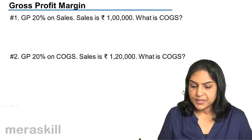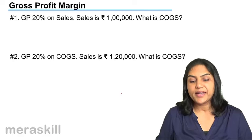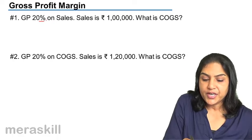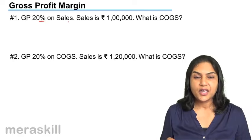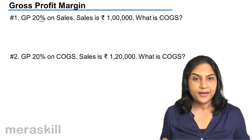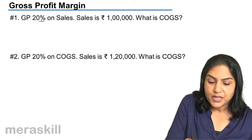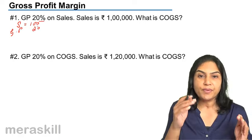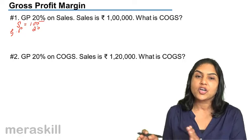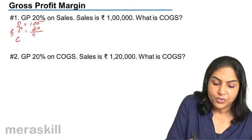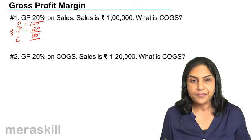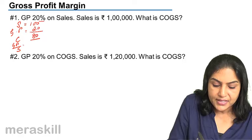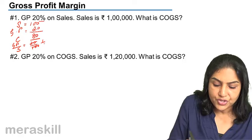Let us consider this with a few examples. If gross profit is 20% on sales and sales is 1 lakh, what is the cost of goods sold? When GP is on sales, sales is 100, so profit is 20. Therefore cost is 80. The relation GP by sales is 20 by 100, which is 1 by 5.